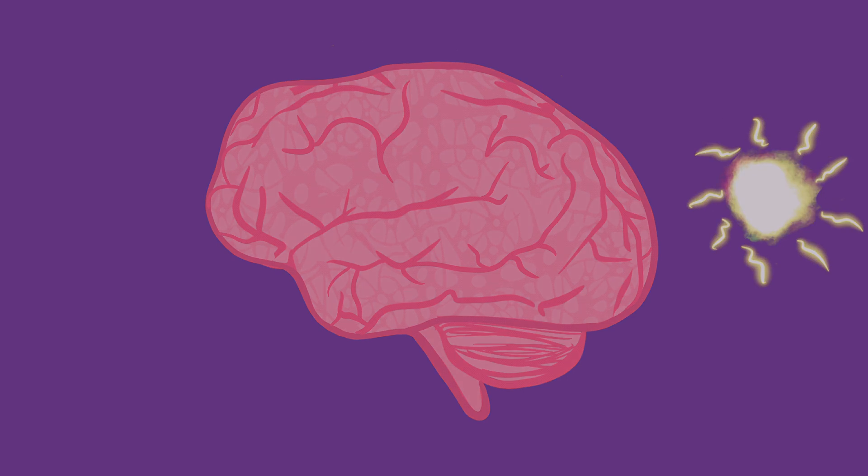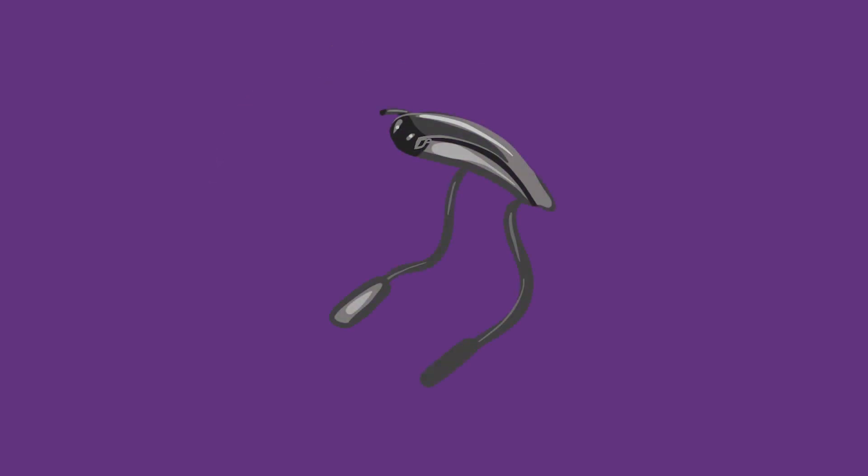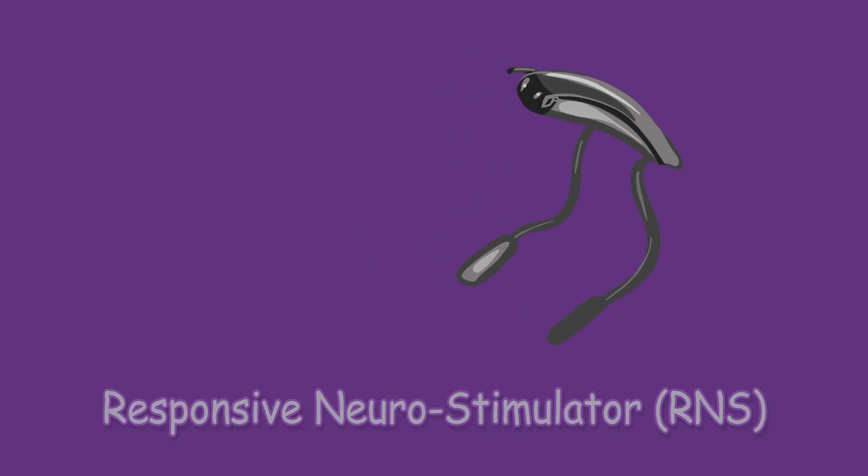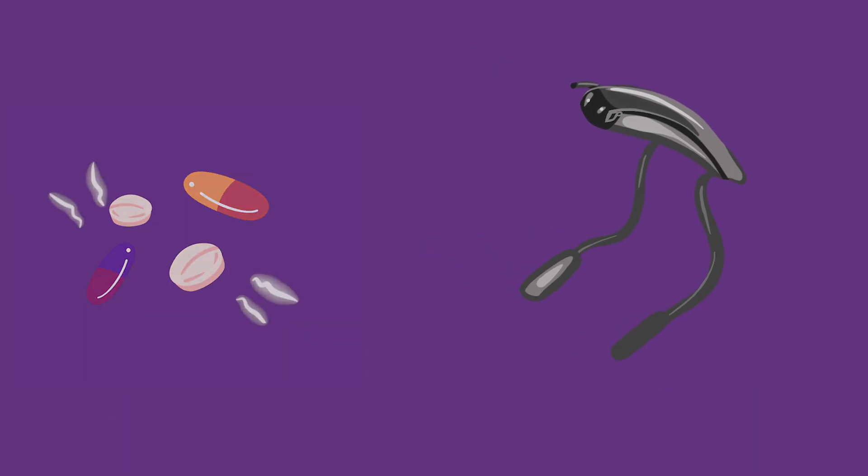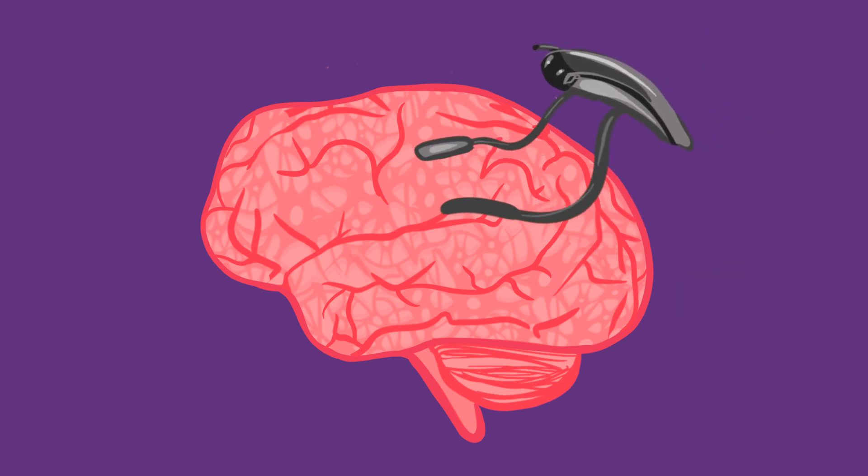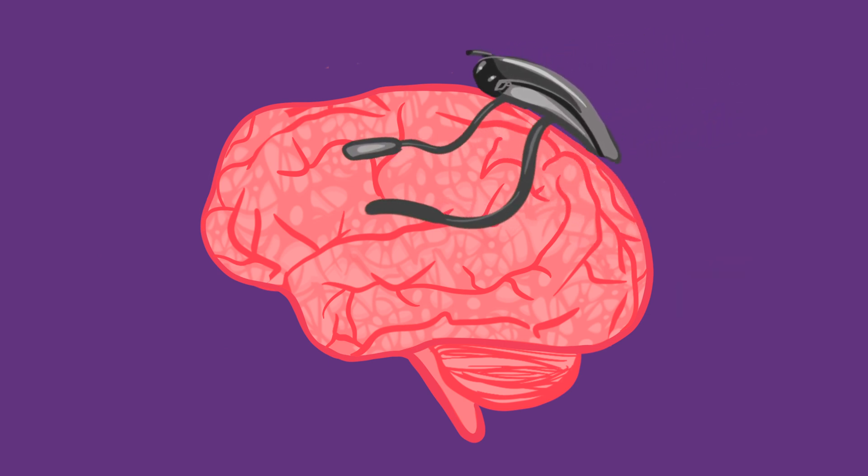And finally, with recent technological advances, a device called Responsive NeuroStimulator has been used to treat patients with epilepsy not responding to drug treatment. The device is implanted within the brain, and continuously monitors the activity of the neurons. And when it senses an increase in neuronal firing, the device produces an electrical impulse, resetting the neurons, and preventing the seizure before it even happens.